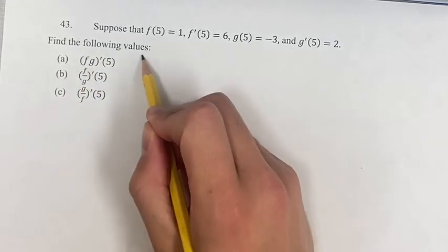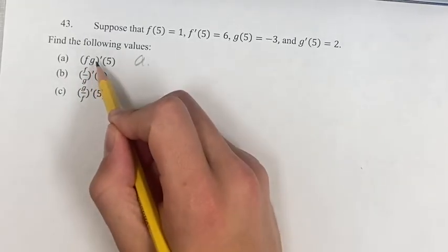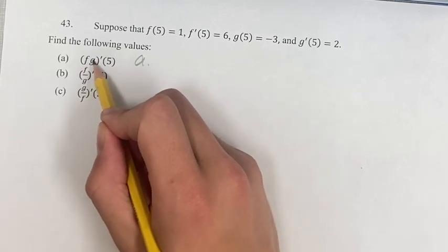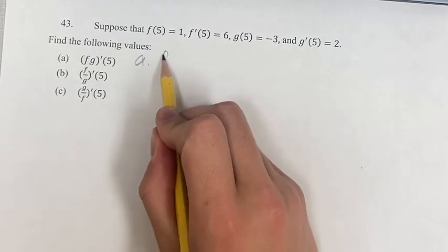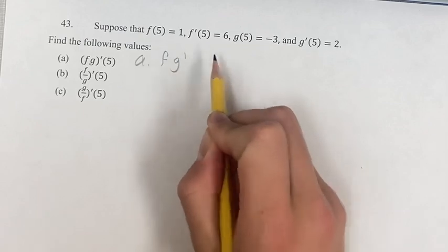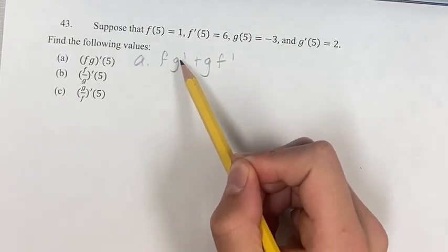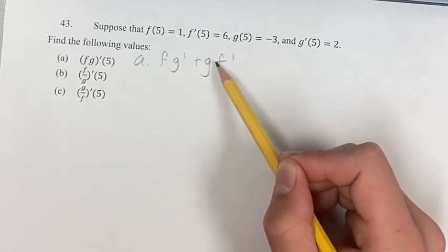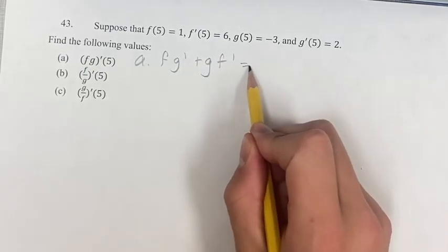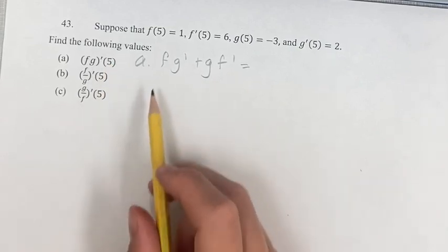For this, we're going to use the product rule. If we're taking the derivative of f times g, that's going to be f times g prime plus g times f prime. Think of this as the first term times the derivative of the second plus the second times the derivative of the first. Luckily, we know what all these are for 5.